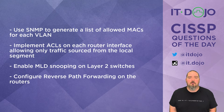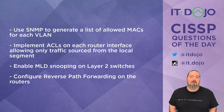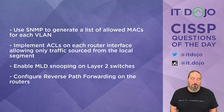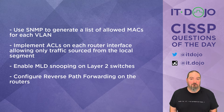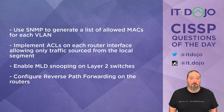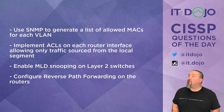Choice number one says to use SNMP — the Simple Network Management Protocol — to create a list of allowed MACs on each VLAN. That all sounds impressive, but it would do nothing to reduce the likelihood of spoofed IP packets. SNMP could help you get a list of MAC addresses, but having that list doesn't prevent spoofed IP packets. Definitely not the right answer.